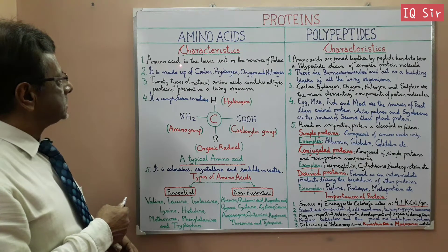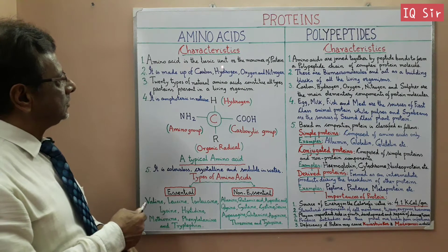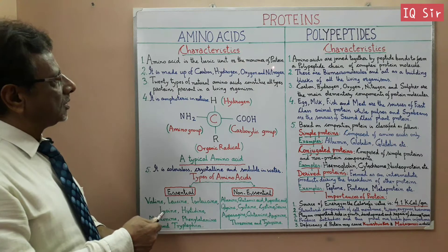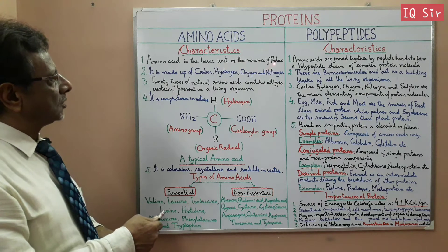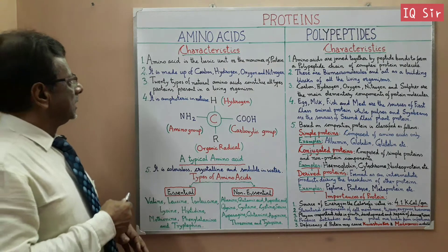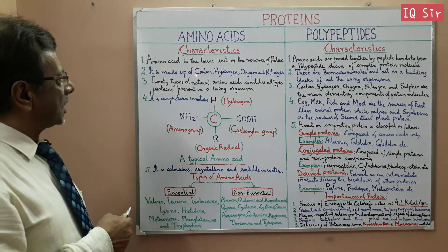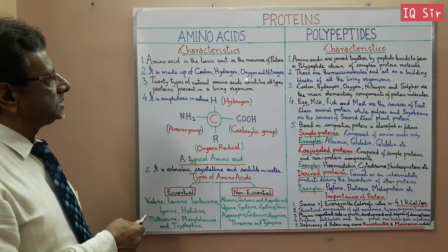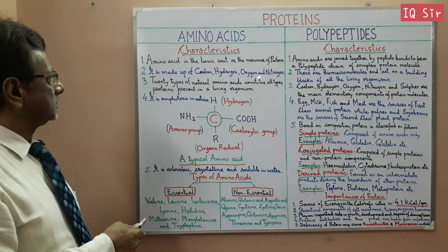Amino Acid is the basic unit, or the monomer, of protein. It is made up of carbon, hydrogen, oxygen and nitrogen.